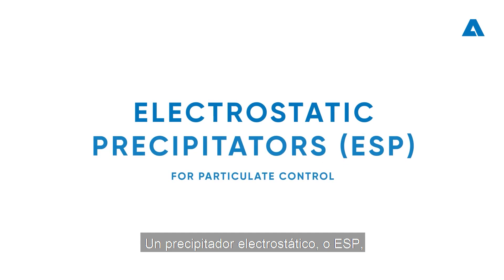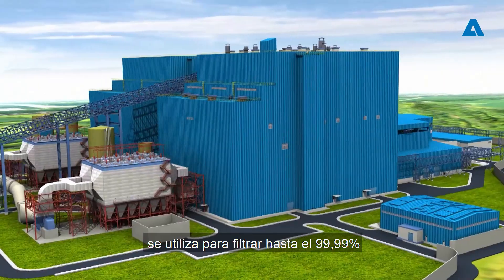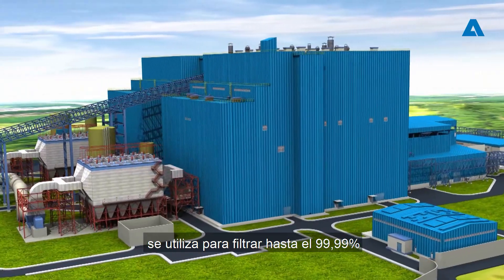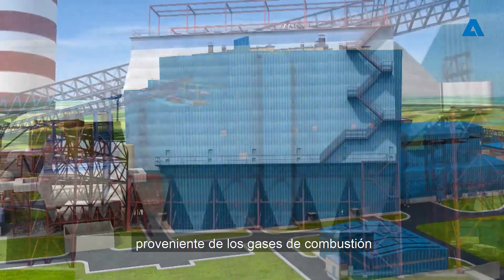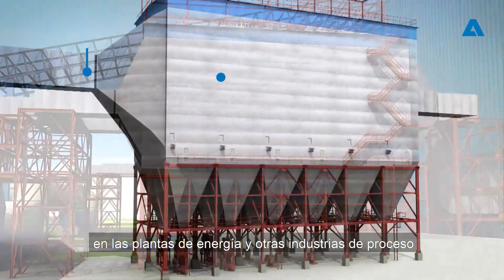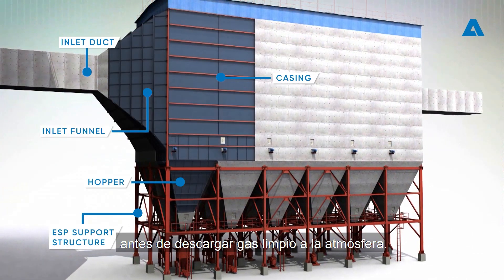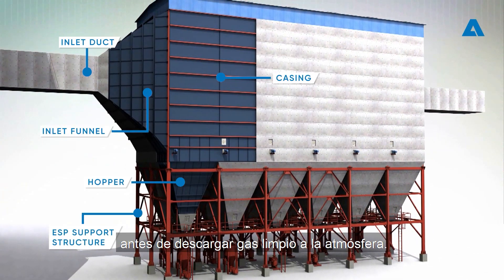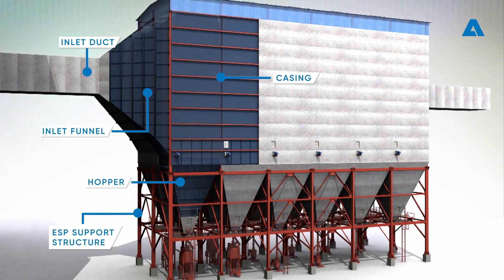An electrostatic precipitator, or ESP, is widely used to filter up to 99.99% of particulate matter emissions from the flue gas in power plants and other process industries, before discharging clean gas into the atmosphere.